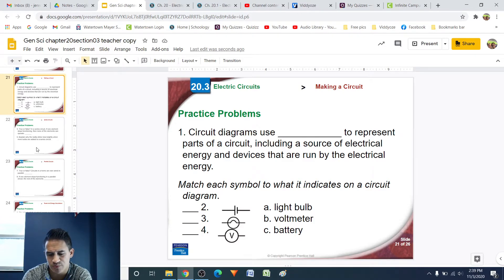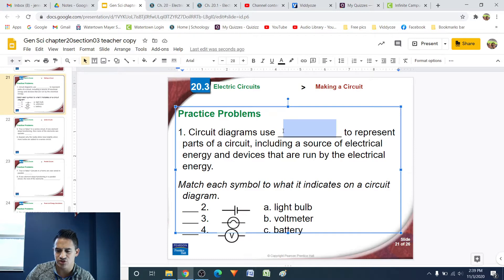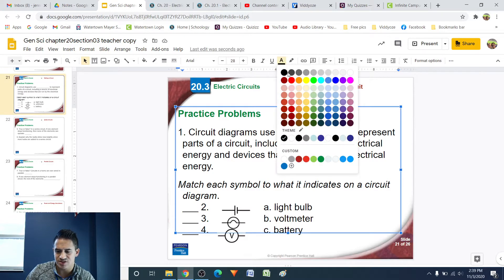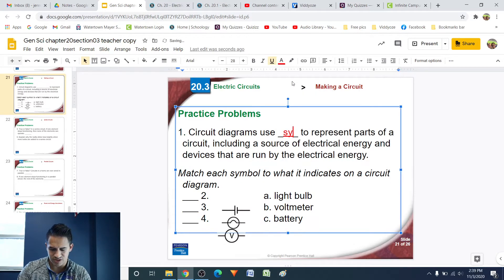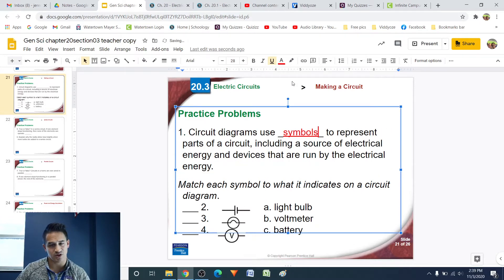circuit diagrams use blank to represent parts of a circuit, including a source of electrical energy and devices that are run by the electrical energy. Circuit diagrams were mentioned in the notes, and they are basically drawings that use symbols to represent the different parts of a circuit, including the energy source and the things that are using that energy.